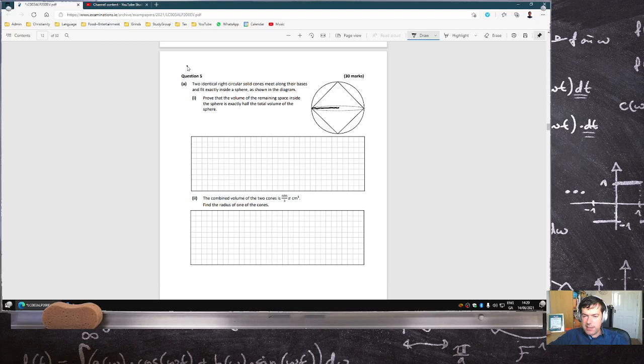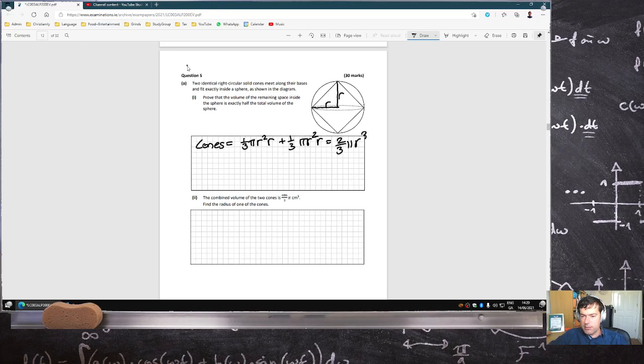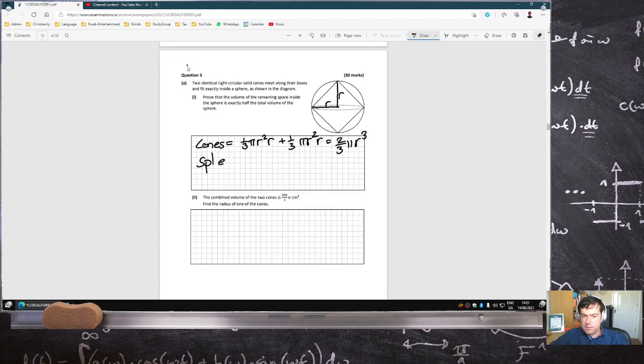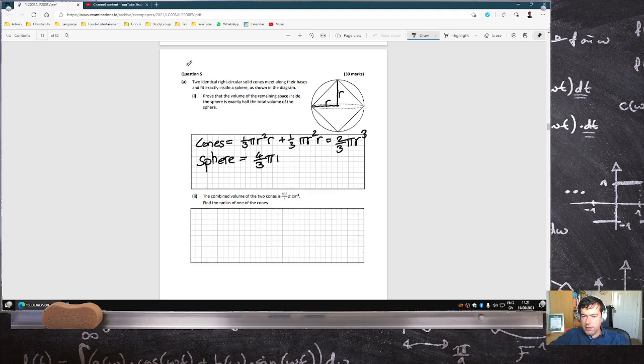The radius of the base of the cone and of the sphere is the same. And also because it's inside the sphere, that's also the radius. So the cones would be one-third pi r squared r plus one-third pi r squared r, which is two-thirds pi r cubed. The sphere is four-thirds pi r cubed.